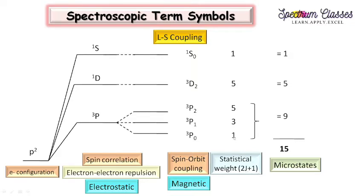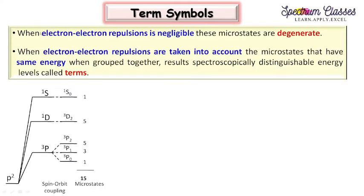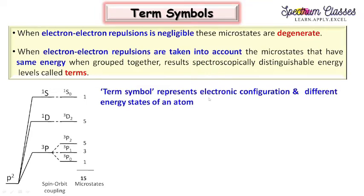Now how can we evaluate these energy levels? This can be evaluated by the formula 2J plus 1. So putting in values: 2 times 0 plus 1 gives 1; 2 times 1 plus 1 gives 3; for the next we get 5; again 5; and for this we get 1. In this manner we have different numbers of microstates for a given electronic configuration. When electron-electron repulsion is negligible, these microstates are degenerate. But when electron-electron repulsion is taken into account, the microstates that have the same energy when grouped together lead to the introduction of term symbols.